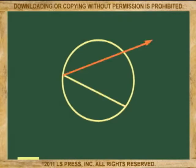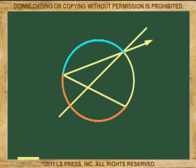As we draw segments, rays, and lines to form angles, they cut arcs on the circle.